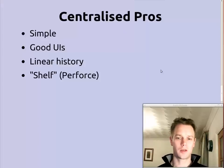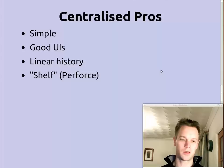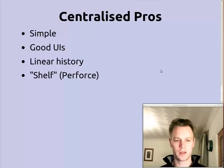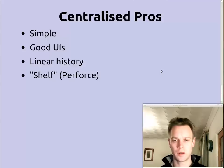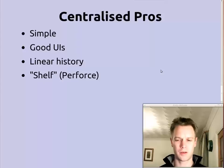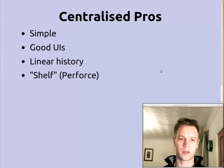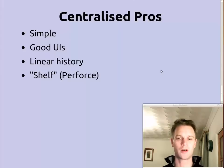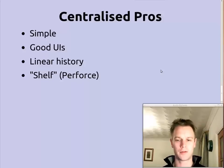So what are the pros and cons of a centralized approach like CVS, Subversion, or Perforce? Well, fundamentally it is quite simple. There's only one history that you have to worry about — one repository where everyone agrees that's where the code lives. Secondly, there are some good user interfaces for these things. I've used CVS and Subversion mostly on the command line, and the Perforce GUI is a good GUI. History is linear. Perforce also has a nice feature called the shelf, where if you're in the middle of doing one thing and you need to pause because you've got an emergency bug fix for an important customer, you can put your change on the shelf and it'll live there until you need it — and you can do something else and then grab it back later. It's a great feature.